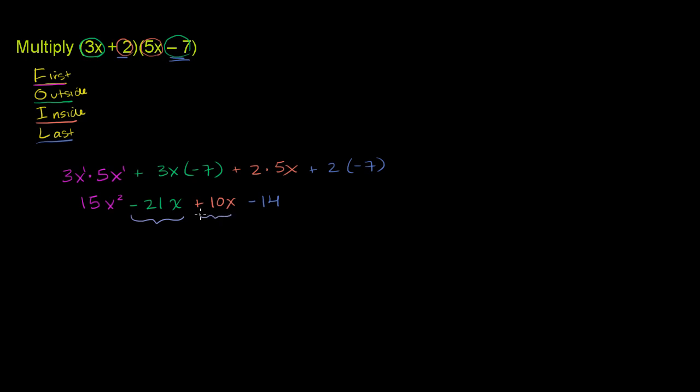We have two terms with an x to the first power, just an x term, right over here. So if we have negative 21 of something, and then you add 10, or another way, if you have 10 of something, and you subtract 21 of them, you're going to have negative 11 of that something.